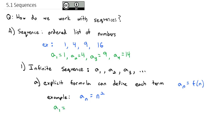When we want a sub 1, that's 1 squared, which is 1. When we want the second term, we plug in 2: 2 squared is 4. When we want the third term, 3 squared is 9. We're just plugging the subscript into the function. This way we could quickly find the 10th term by plugging 10 in — 10 squared is 100. That's an explicit formula.